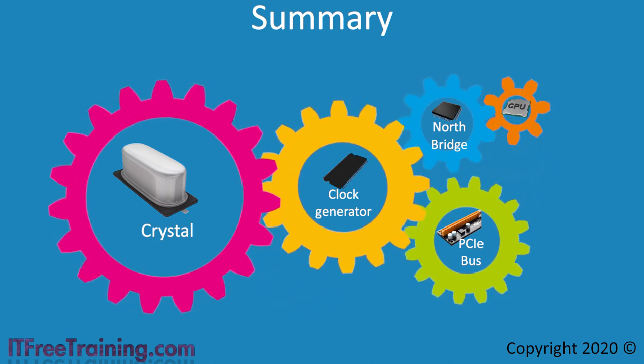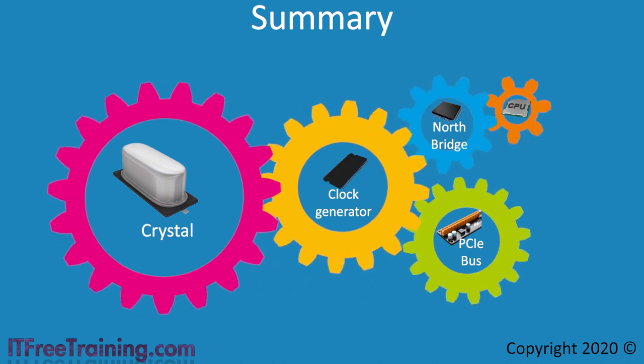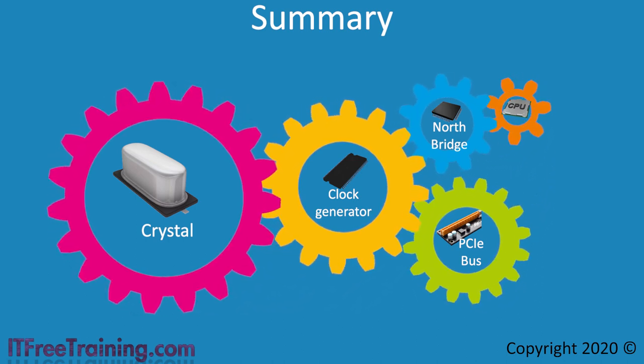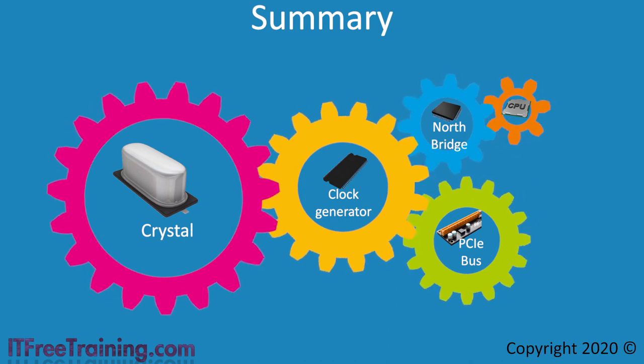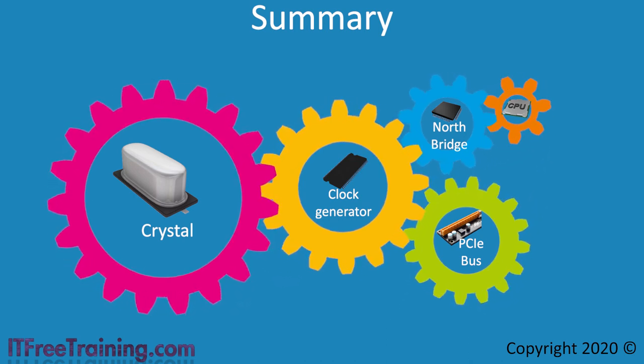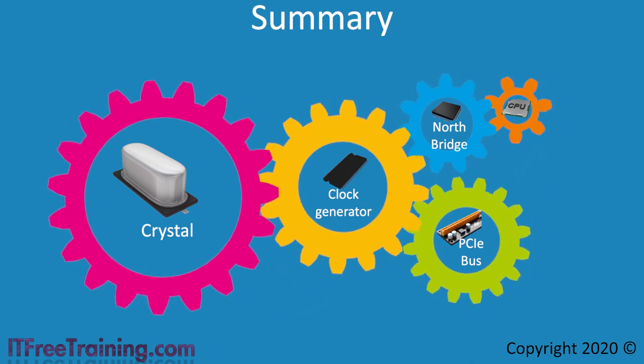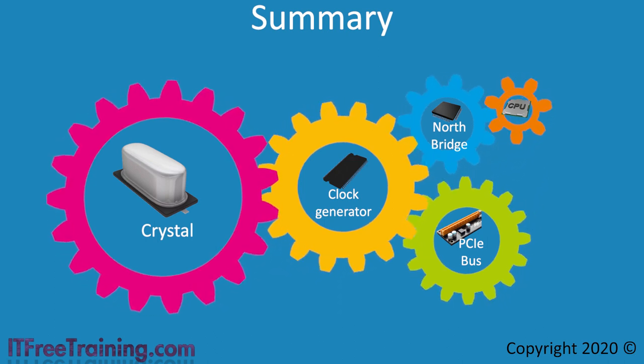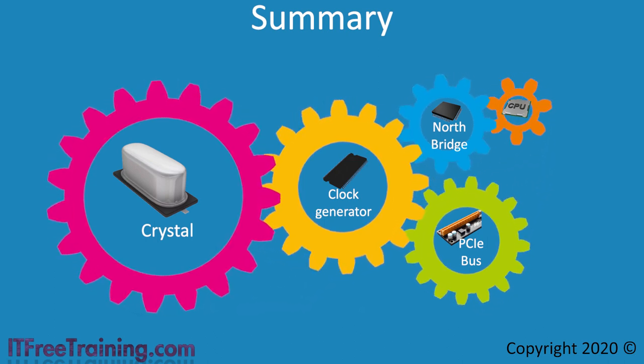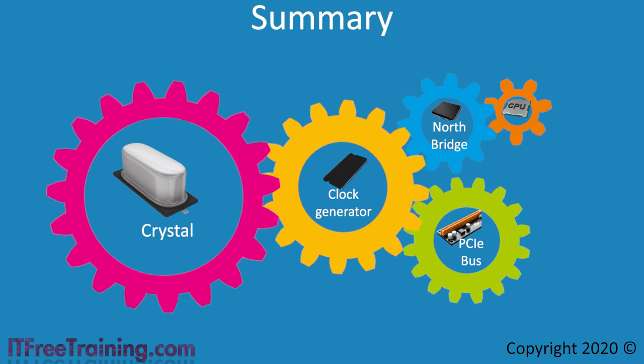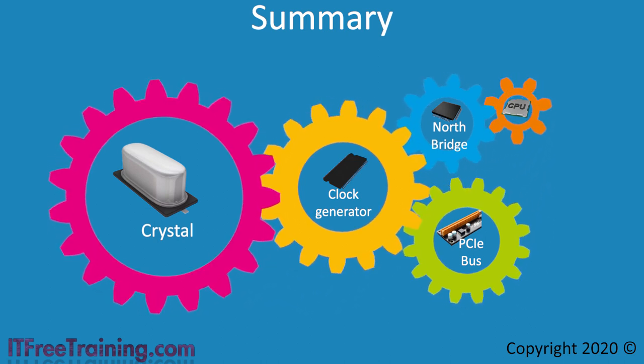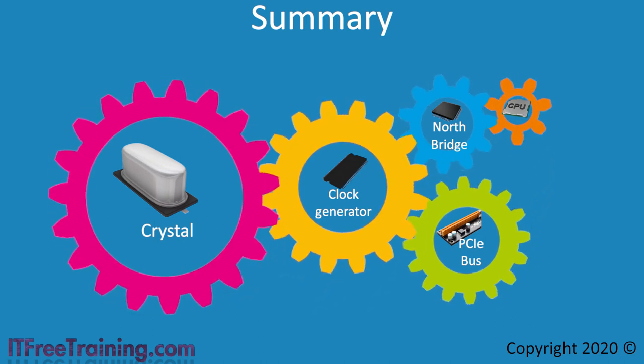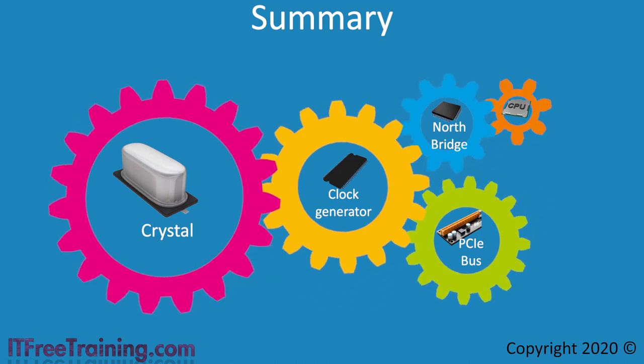You should be able to see that even though the crystal speed is slow compared to the rest of the computer, it forms the basic building blocks for the clock rates. Just like a mechanical system where the gears turning at a certain speed will cause other gears to turn at different speeds, the crystal forms the base for all the other clock speeds. Even though the crystal speed is slow compared to the rest of the computer, the speed of the crystal is reliable and does not change.